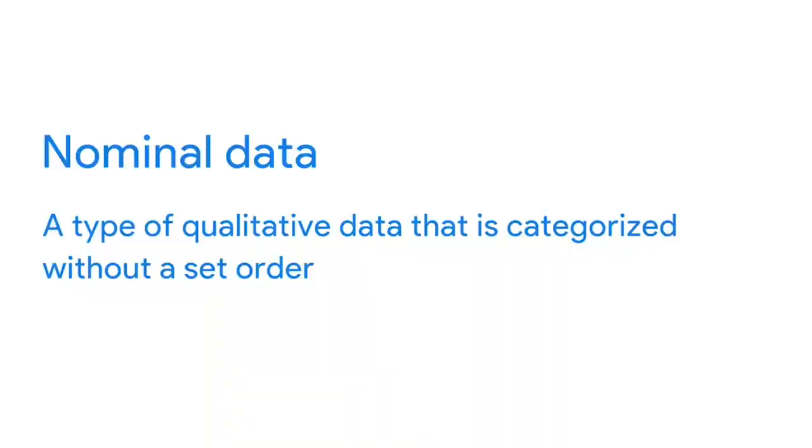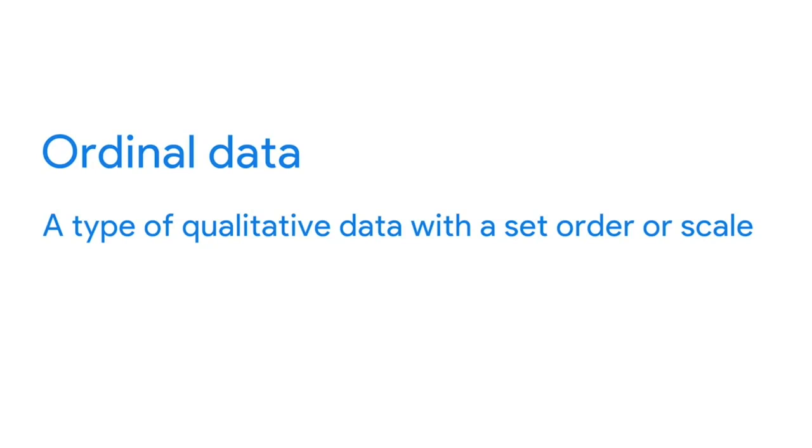There's also nominal and ordinal data. Nominal data is a type of qualitative data that's categorized without a set order — this kind of data doesn't have a sequence. For example, if you ask people if they've watched a given movie, their responses would be nominal data. They could respond yes, no, or not sure. These choices don't have a particular order. Ordinal data, on the other hand, is a type of qualitative data with a set order or scale. If you asked a group of people to rank a movie from 1 to 5, some might rank it as a 2, others a 4, and so on. These rankings are in order of how much each person liked the movie.